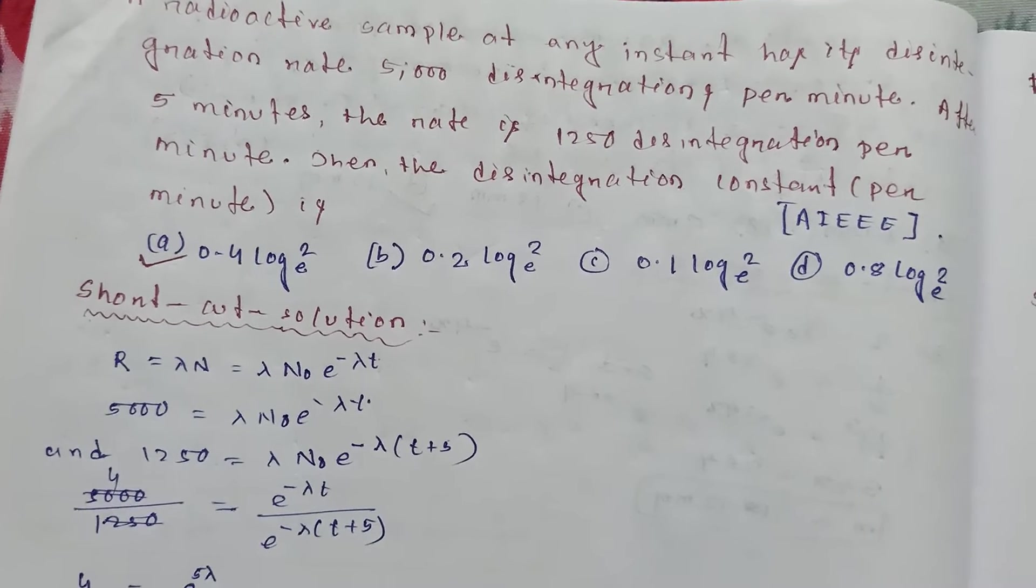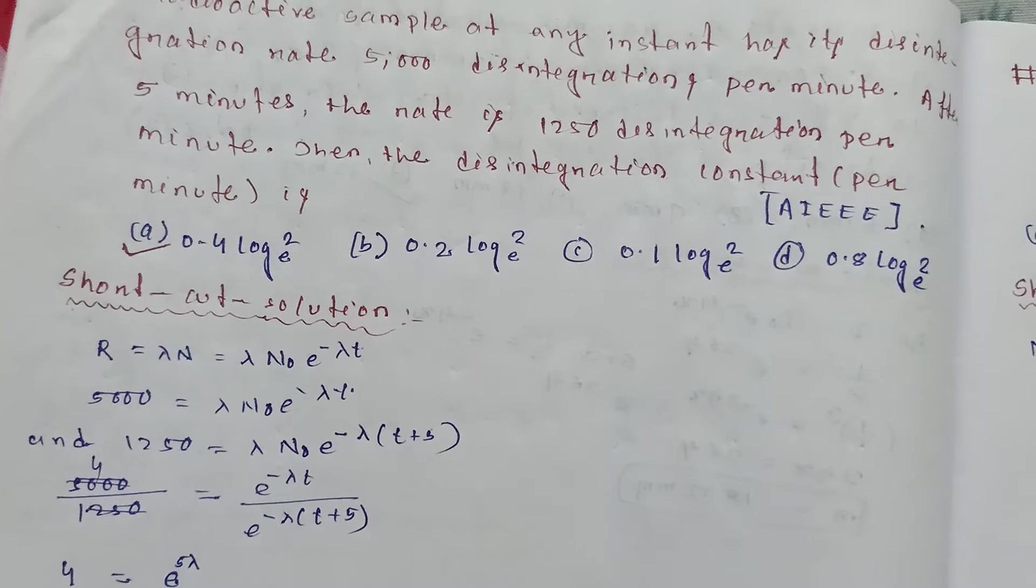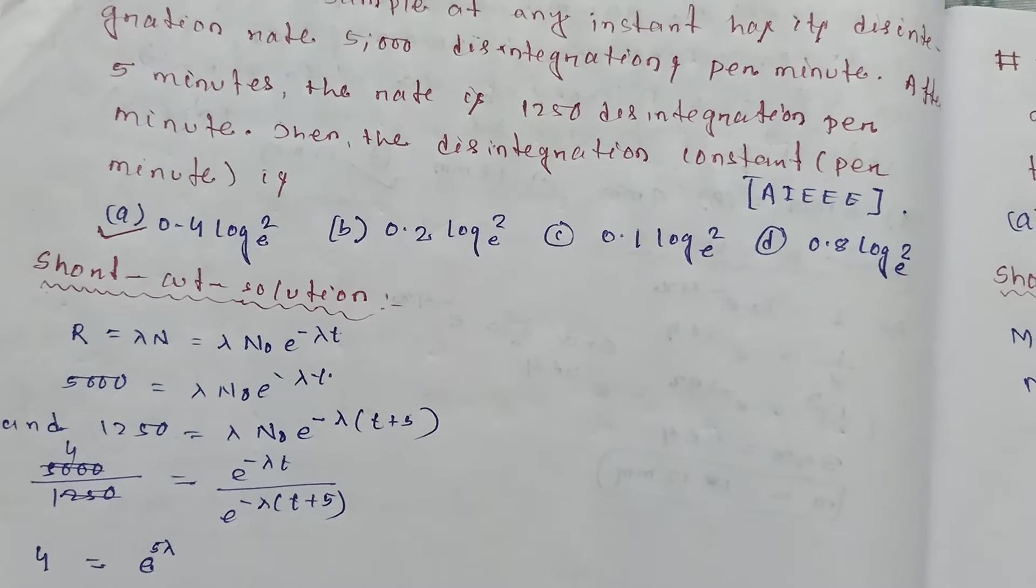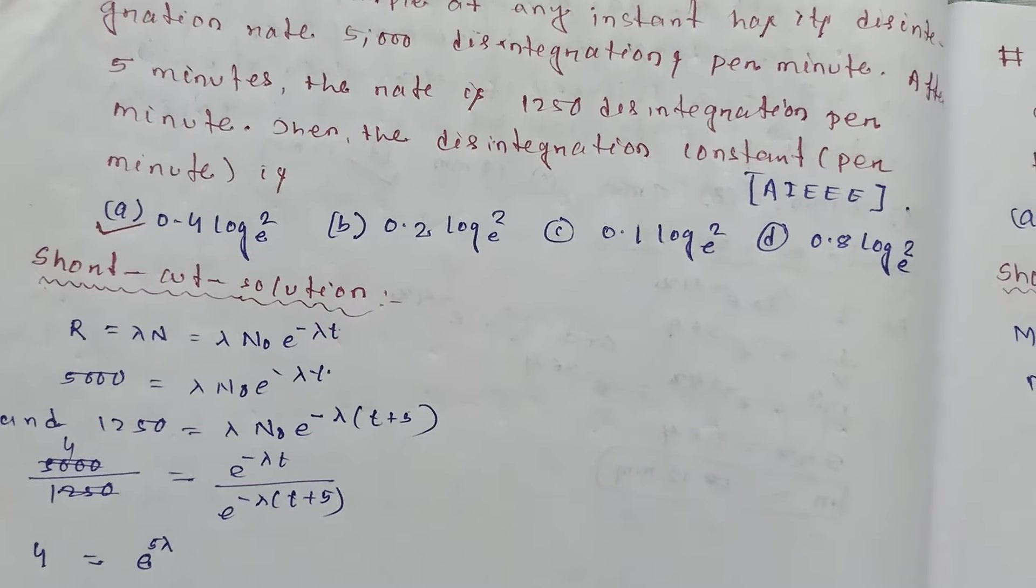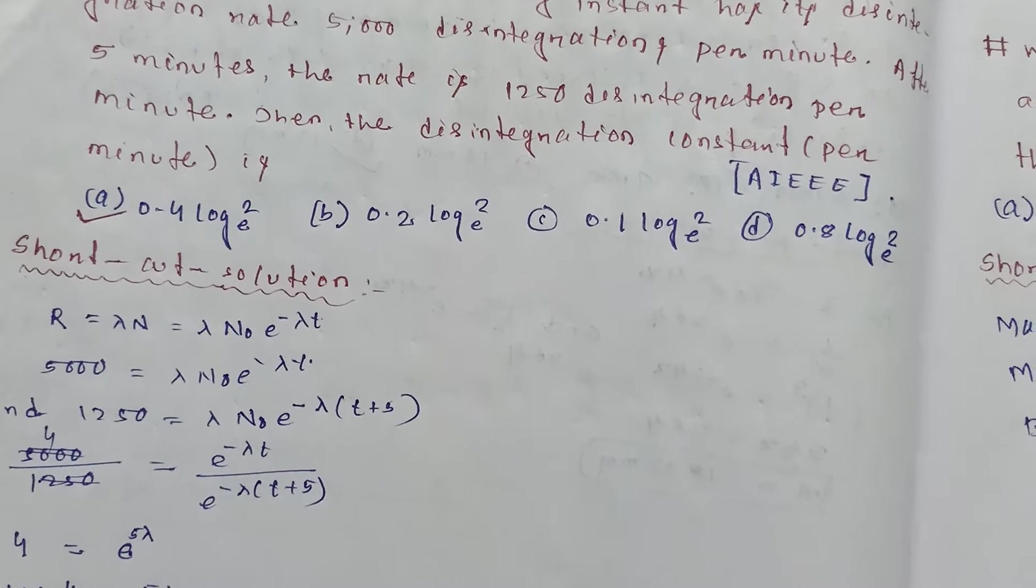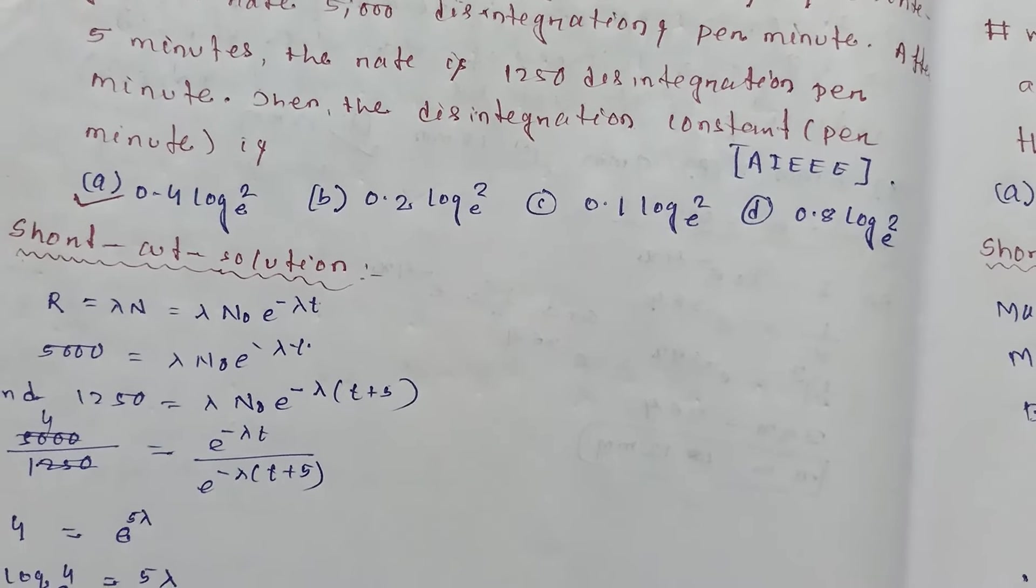A radioactive sample at any instant has a disintegration rate of 5000 disintegrations per minute. After 5 minutes, the rate is 1250 disintegrations per minute. Then the disintegration constant per minute is how much?